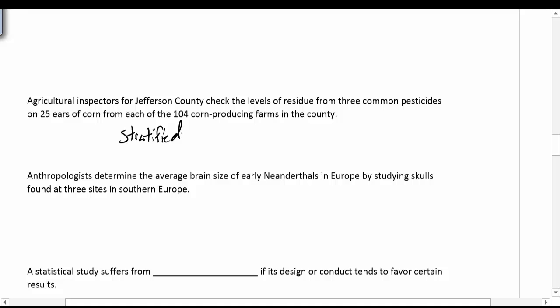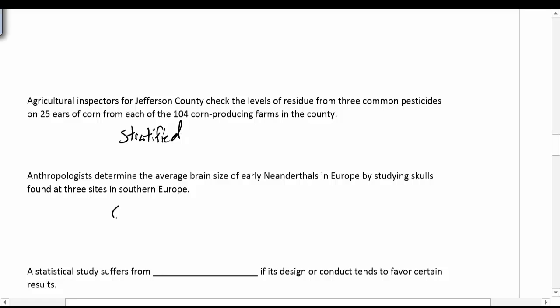Anthropologists determined the average brain size of early Neanderthals in Europe by studying skulls found at three sites in southern Europe. Did they do anything to pick that? It turns out they actually didn't have too much choice — they got what they got. So it was a convenience sample. It doesn't necessarily mean that it's representative, but it's all they have to work with, so they'll make conclusions based off that.